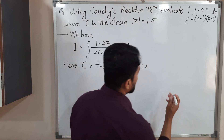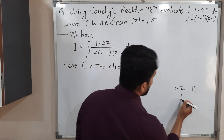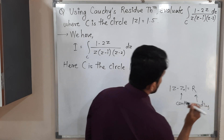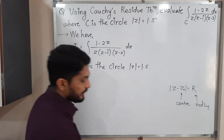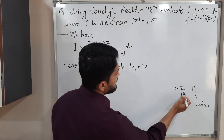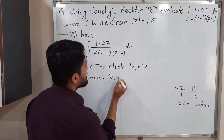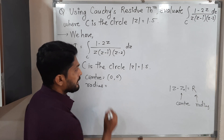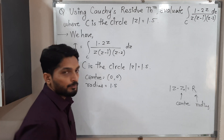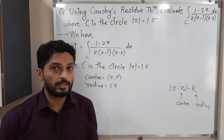What is the standard equation of a circle? Mod Z minus Z-naught equals R. This is the standard equation: Z-naught is the center and R is the radius. Comparing, since there is no Z minus anything, Z-naught is 0, so the center is (0, 0) and radius is 1.5. That means this is a circle with center at the origin and radius 1.5.